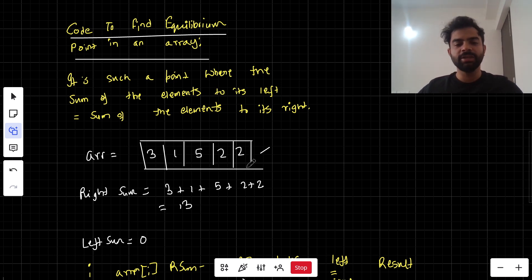We have to find a point where both sides become equal. These are the indexes of the array. If you see, 3 plus 1 plus 5, we have to find such a point where both the sides become equal.